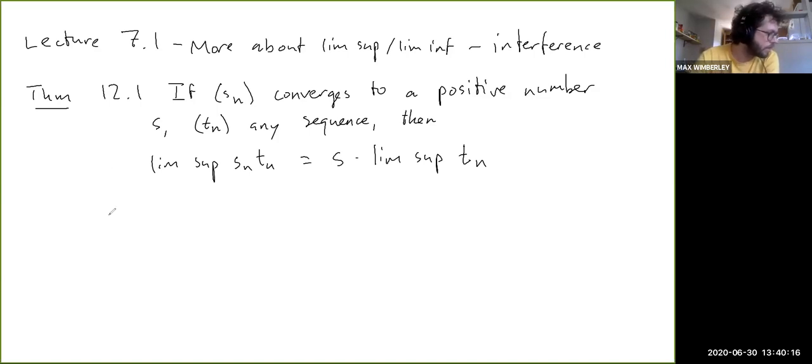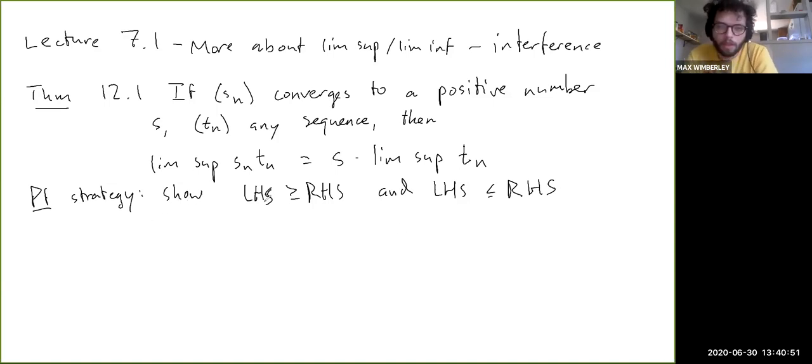The strategy for proving this is to establish two inequalities. We're going to show the left hand side is greater than or equal to the right hand side, and the left hand side is less than or equal to the right hand side. It turns out that the second part of this basically follows from the first part. So let's just focus on this first part here.